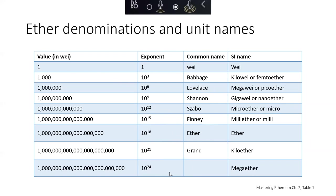These smaller unit names are named in honor of various computer scientists. Hal Finney was pretty big in Bitcoin. Szabo came up with the idea of smart contracts. Babbage and Lovelace are perhaps our most famous computer scientists. And Shannon is a relatively famous cryptographer. So that gives you an idea of who some of those people are.